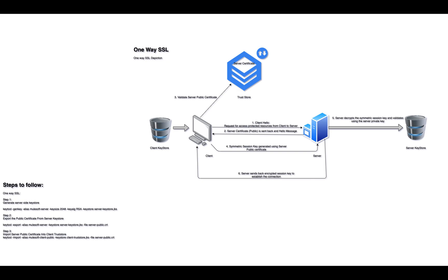Let's start with the flow. There is a first request generated from the client side towards the server, known as the client hello. It asks for access to protected resources from the client to the server side. The server in response shares its public certificate and responds back with a hello message to the client. The client will then validate the server public certificate within its client trust store, where a CA authority is enabled for validation.